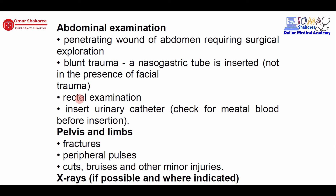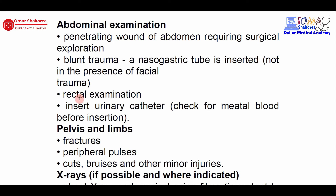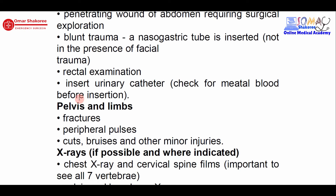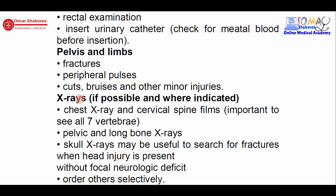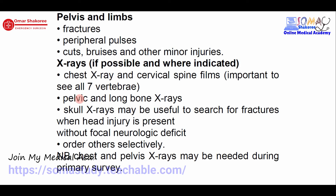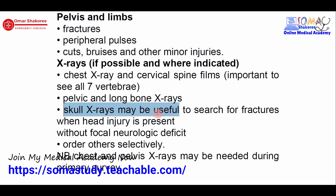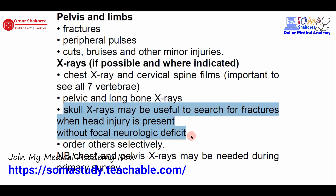For blunt trauma, put a nasogastric tube and keep the patient nil by mouth. Check per-rectum examination and insert a urine catheter as mentioned before. For pelvis and limbs, check for fractures, peripheral pulses, wounds, bruises, and minor injuries. For X-rays in multiple trauma patients, you need chest X-ray, pelvic and long bone X-ray, and you may need skull X-ray — useful to search for fractures when head injury is present without focal neurological deficit. Any head injury with focal neurological deficit needs a CT scan, not a skull X-ray.